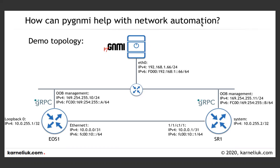Previously, in the first two videos we reviewed the capabilities and GET. We know how to get information about the network elements and how to collect the configuration or operational data. Today we are doing the third step — SET. We will take a look at how we could modify the configuration of the network element: either to create new, modify existing, or delete configuration that we don't need anymore.